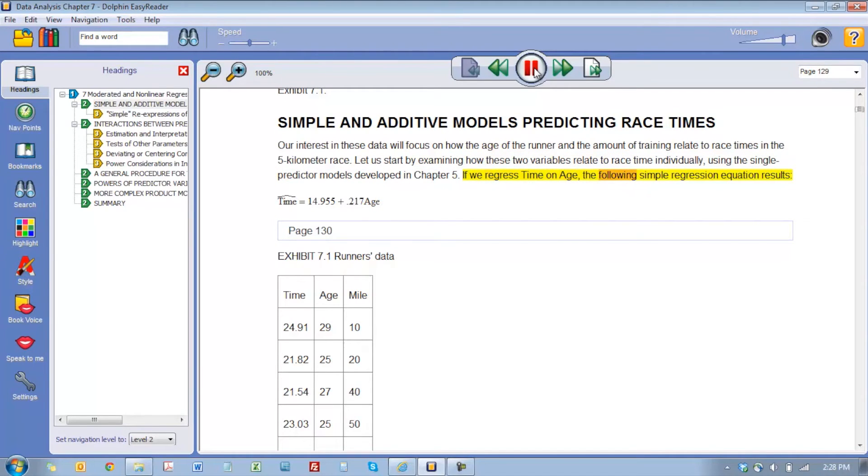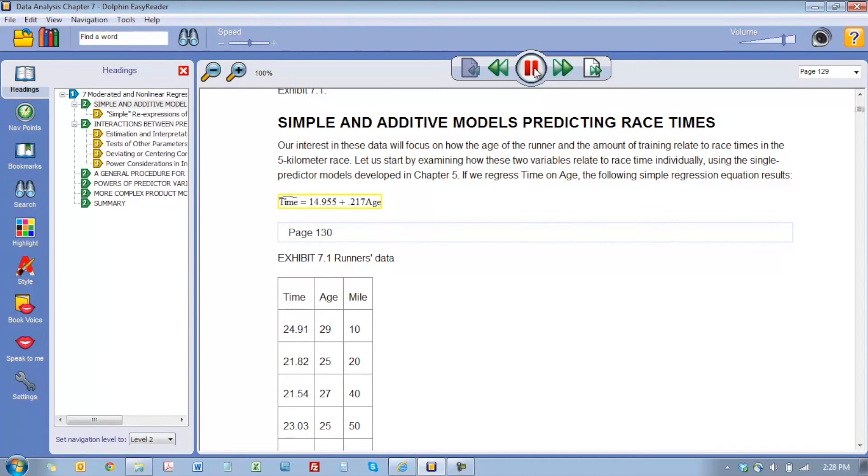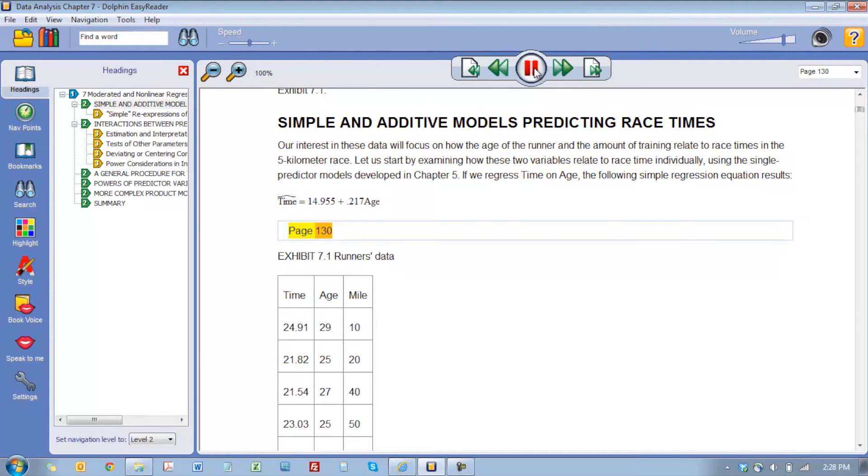MathML is more mobile than Nemeth Braille books and more cost-effective. MathML is also perfect for auditory learners because it reads the entire equation out loud. For example: 'Exhibit 7.1, runners data, time, age, mile, 24.9, 1, 29, 10.'